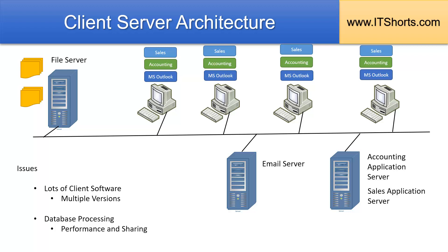This worked well for a couple of years from the early 90s to mid-90s. However, as the need for more and faster processing kept growing, this model had some disadvantages. For example, an environment with a large number of application servers required the respective client software to be installed on the client computers. Also, clients may be running different operating systems — some were running Windows 3.11, some Windows 95, some Linux, Mac OS, IBM OS/2, etc. So application developers needed to create a client version for each of these operating systems.